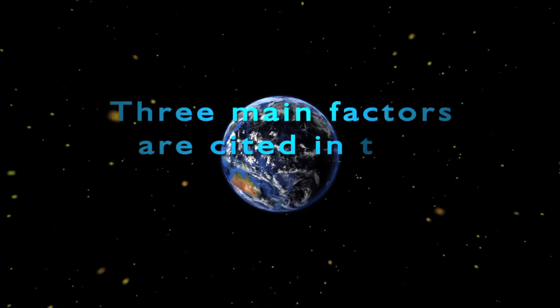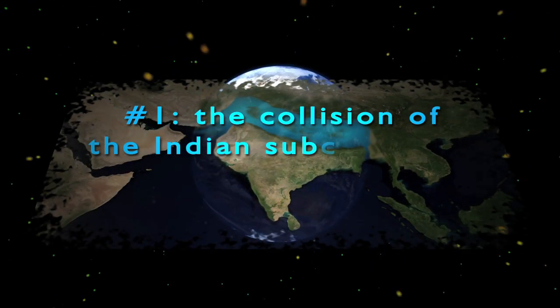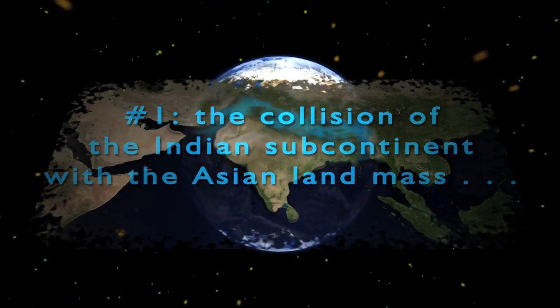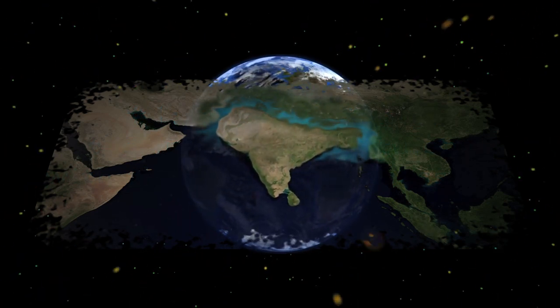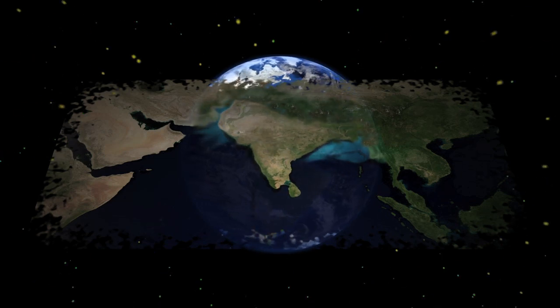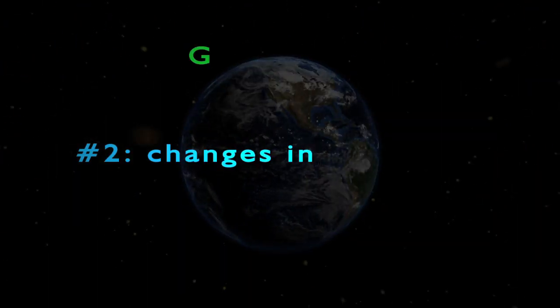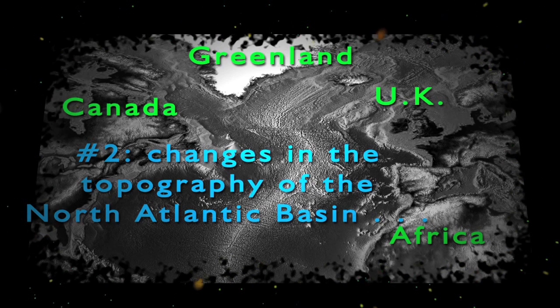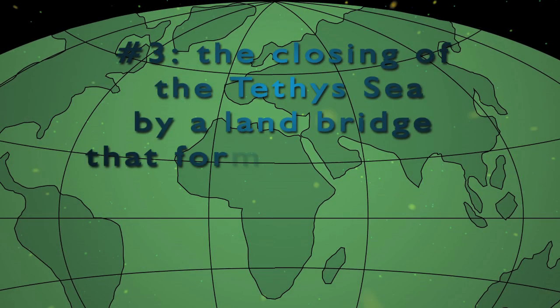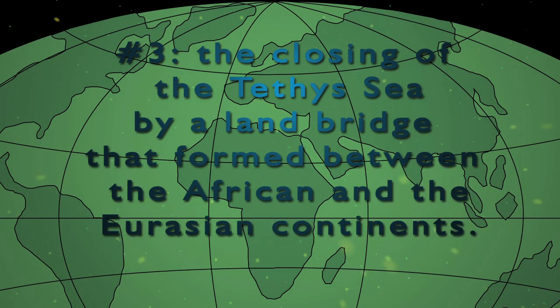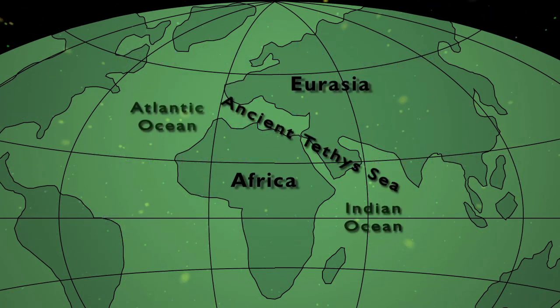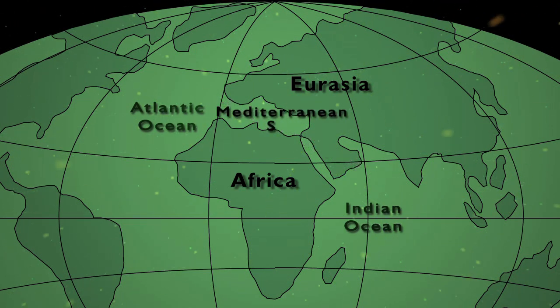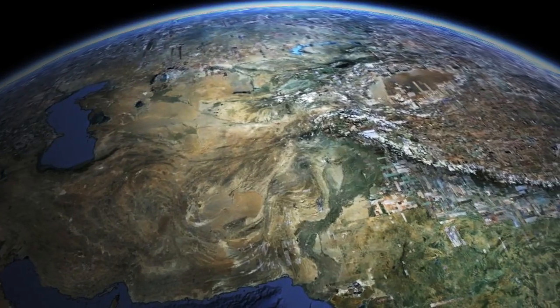Three main factors are cited in this cooling trend. Number one, the collision of the Indian subcontinent with the Asian land mass, which resulted in the upthrusting of the Earth's crust leading to the creation of the Himalaya Mountains and the Tibetan Plateau starting about 50 million years ago. Number two, changes in the topography of the North Atlantic Basin which reduced the northward flow of warm surface water. Number three, the closing of the Tethys Sea by a land bridge that formed between the African and Eurasian continents, blocking the connection between the Atlantic and Indian Oceans and reducing the area of tropical and subtropical oceans. The present-day Indian Ocean and the Mediterranean Sea are remnants of the ancient Tethys Sea.